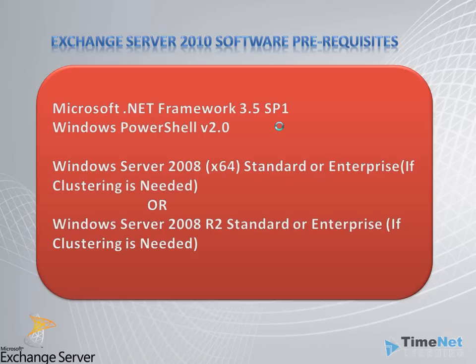We can now move on to the implementation part. Let me connect to my remote computer where we will be installing Exchange 2010. I am assuming you already have an active domain environment because the server needs to be a member of the domain. I won't be showing how to install a domain in this video, but you will find that in another series. I am going to use a Windows Server 2008 R2 machine to install Exchange Server now, so see you there.